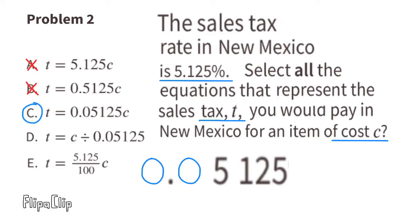Equation D: t = c ÷ 0.05125 — dividing would make the result way too large, so not D. Equation E uses 5.125 like equation A, but this time it's divided by 100, which makes it the right amount. So I would also select equation E: t = (5.125 / 100) × c.